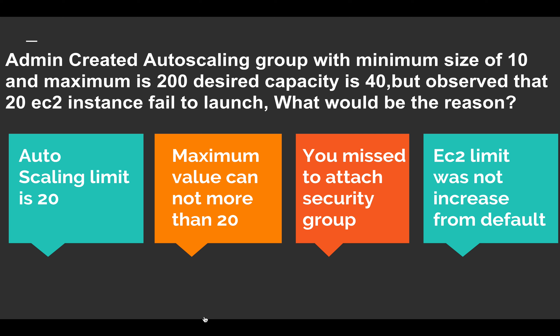The first option — auto scaling limit is 20 — is wrong. If the auto scaling limit were 20, it would defeat the purpose of auto scaling. In this case, we've configured the maximum limit as 200 and the minimum as 10, with a desired count of 40, so 40 instances should run at a time. The first answer is wrong.